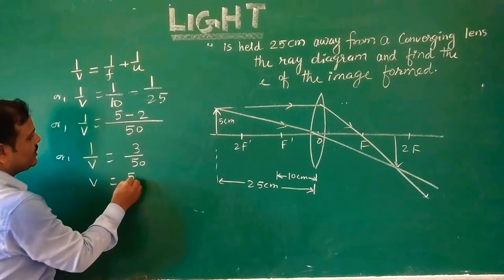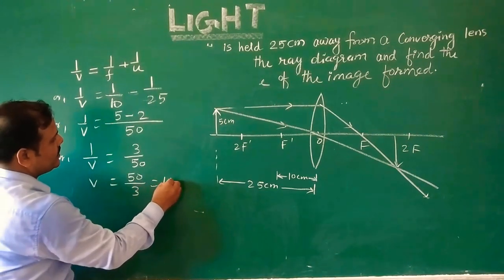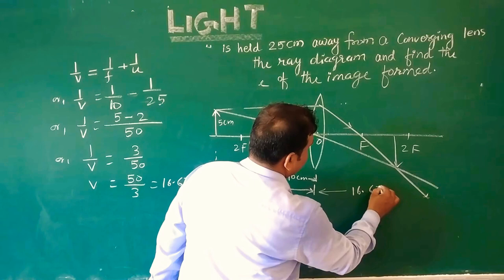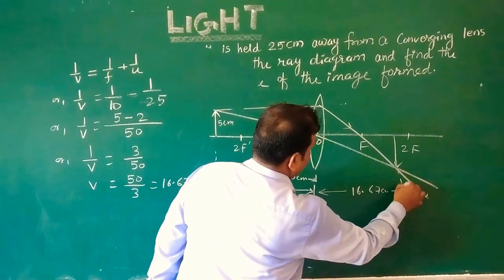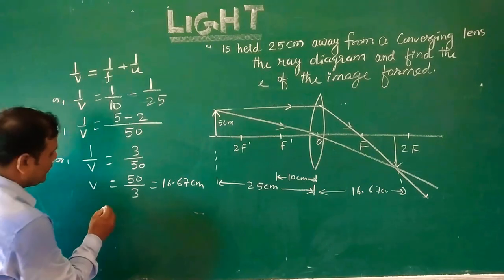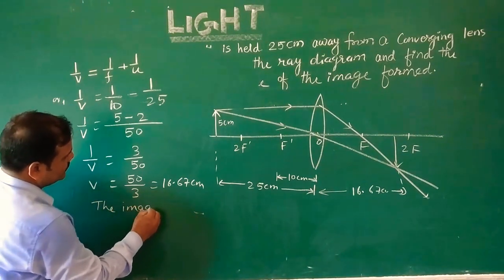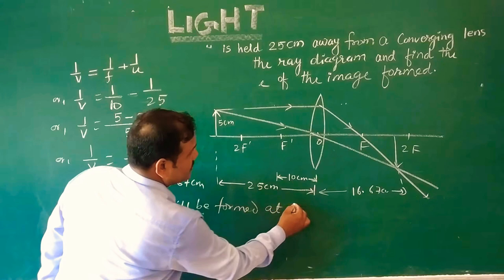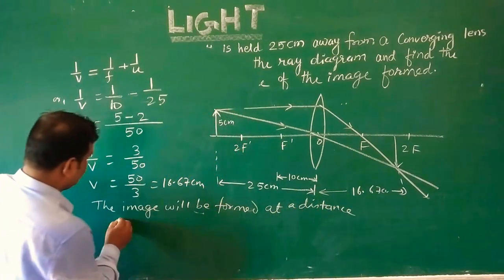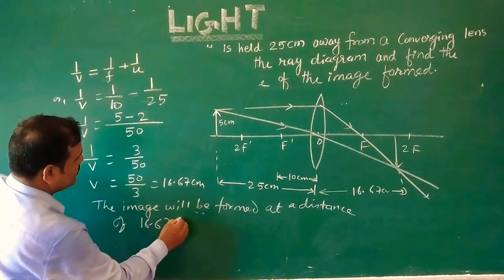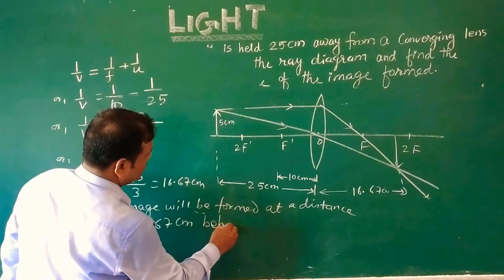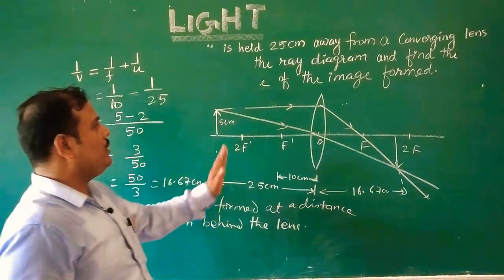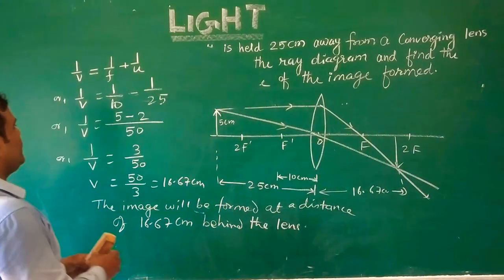So V equals 50/3, that is 16.67 centimeter. This means the image distance is 16.67 centimeter. We can write that the image is formed behind the lens — that means on the opposite side of the object.